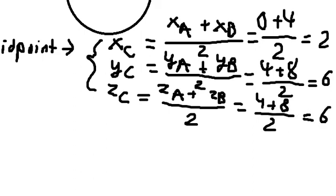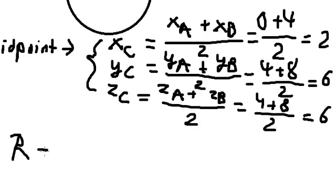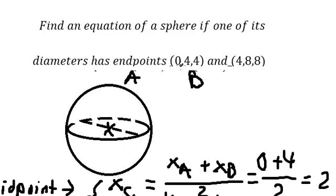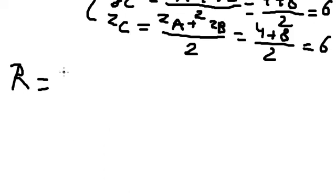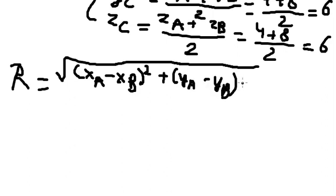Next, we need to find the radius of the sphere. We have point A and point B on the diameter, so we use the formula: R = √((xa - xb)² + (ya - yb)² + (za - zb)²) divided by 2.